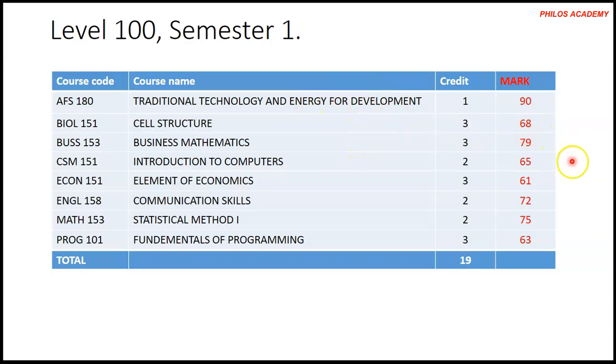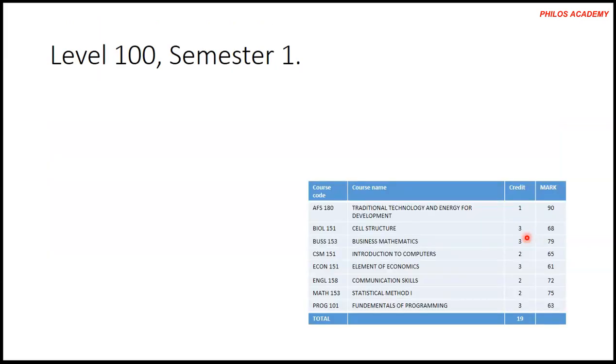Let's say you ended up getting 90 in Traditional Technology, 68 in Cell Structure, 79 in Business Math, 65 in Introduction to Computers, 61 in Economics, 72 in Communication Skills, 75 in Statistics, and 63 in Programming. Now to calculate your weighted average for that semester, you are going to take your credit hour for each course times the mark, everything put together.